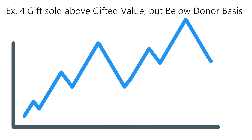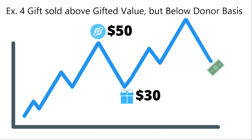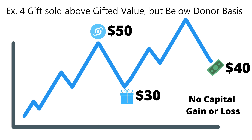Example 4: gifts sold above the gifted value but below the donor basis. In this case, Jason purchased one HNT for $50, gifted it to Austin at $30, and Austin sold at $40. If your gift has appreciated in value but not above the donor's cost basis, you do nothing. There is no capital gain or loss on this sale. Austin records no gain or loss as he sold below the donor's cost basis.